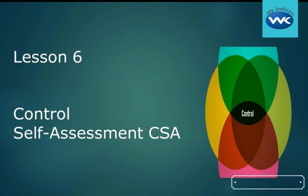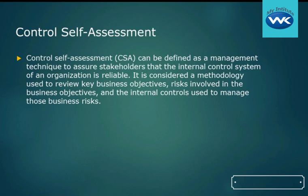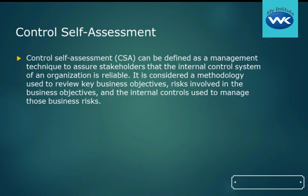We're going to take a look at control self-assessment in this lesson. The definition is a management technique to assure stakeholders that the internal control systems of an organization are reliable. They do this by having a methodology that allows them to review the key business objectives, the risks involved with those objectives, and the internal controls used to manage those risks. It's an ongoing evaluation where internal employees are essentially doing their own constant audit of the internal controls to make sure they are safe, secure, and meeting the objectives. That ongoing monitoring brings extra confidence to stakeholders that the organization is doing everything it can to be reliable.